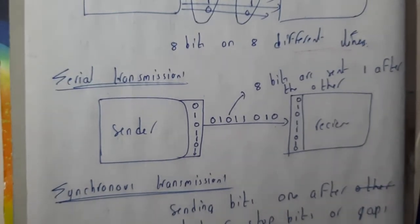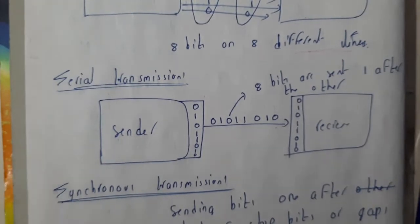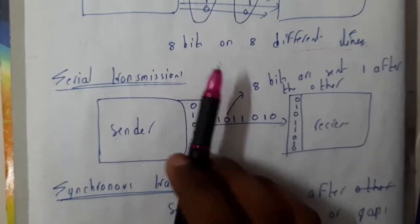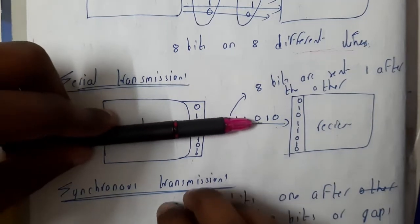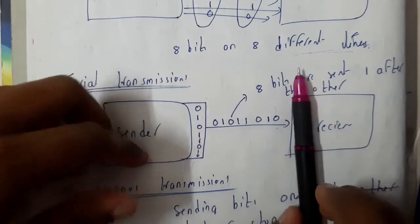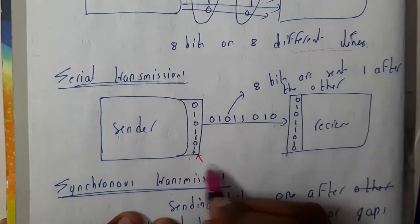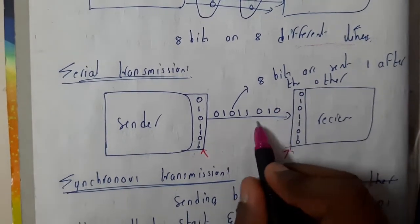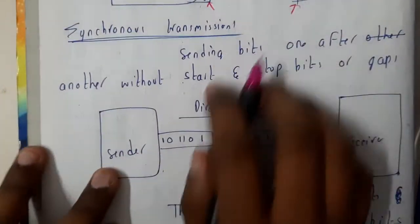Now let us go through serial transmission. In serial transmission, data transmission occurs bit by bit. For example, to transfer 0 1 0 1 1 0 1 0, the data is sent bit by bit, received, and stored again. The receiver reconstructs the original data. In serial transmission, there is only one dedicated line in which data is sent bit by bit.